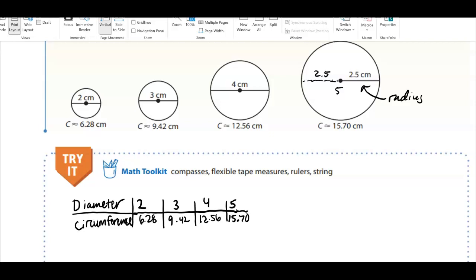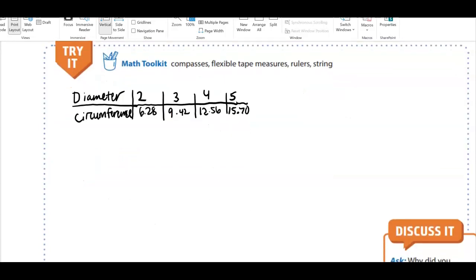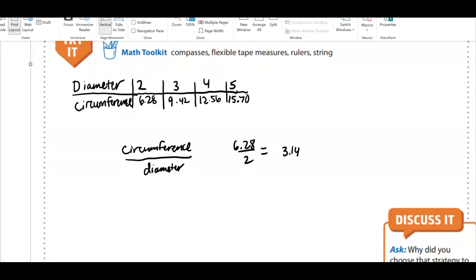So let's go ahead and figure out what the relationship is between our circumference and our diameter. So circumference and diameter relationship. Let's take our circumference. Maybe you can already see it in the table and divide that by our diameter. So for our first one, that's 6.28 divided by 2 gives us 3.14.